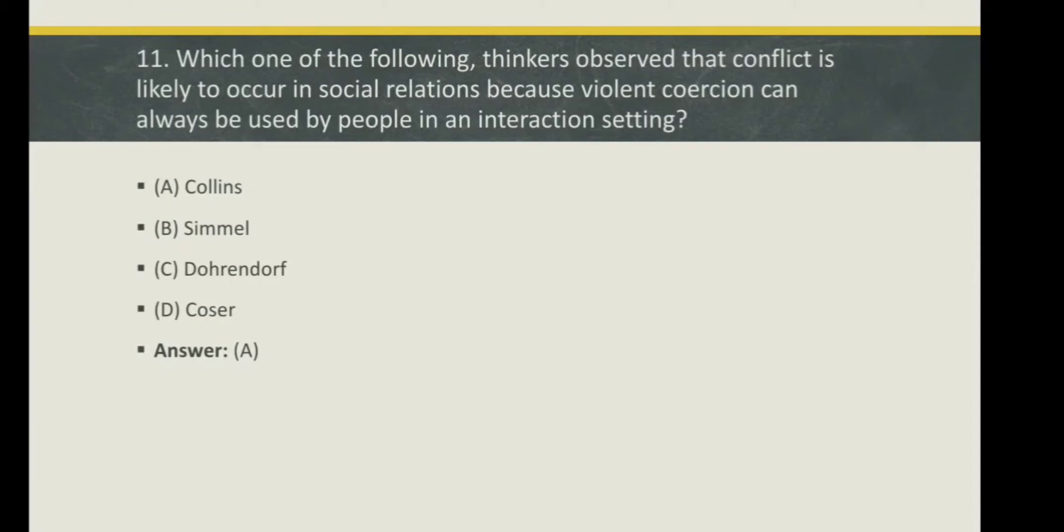Option A: Collins. Option B: Simmel. Option C: Dahrendorf. Option D: Coser. Here right answer is Option A: Collins. So, Collins observed that conflict is likely to occur in social relations because violent cohesion can always be used by people in an interaction setting.